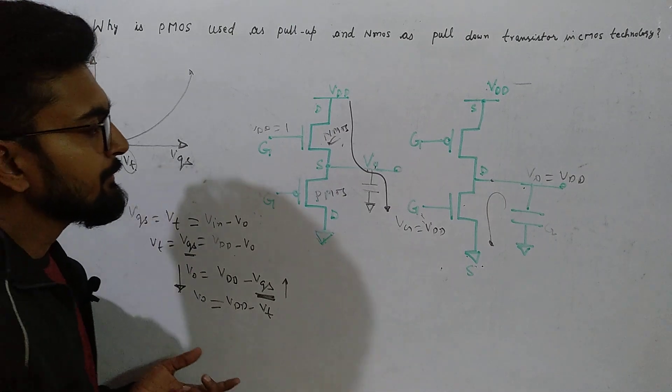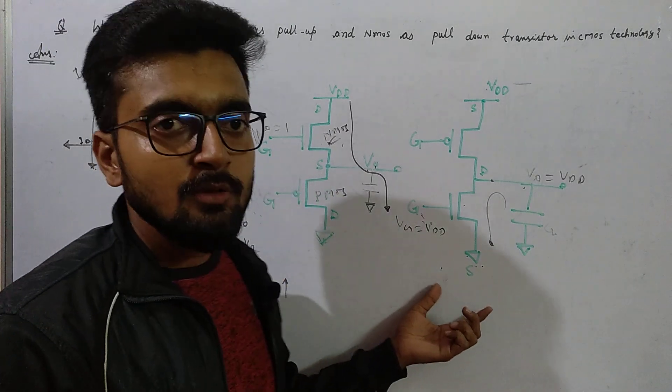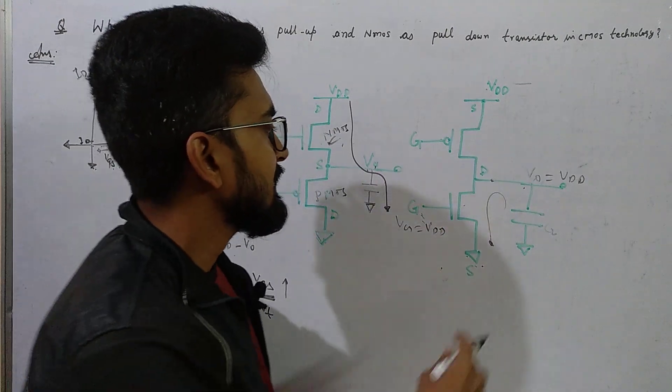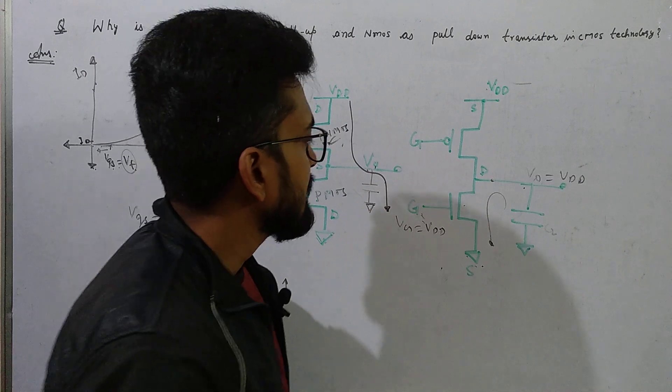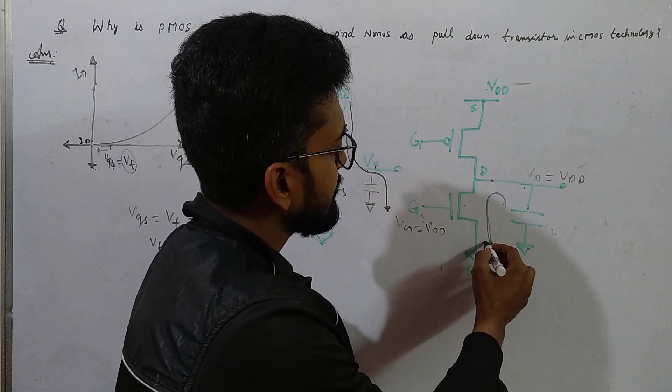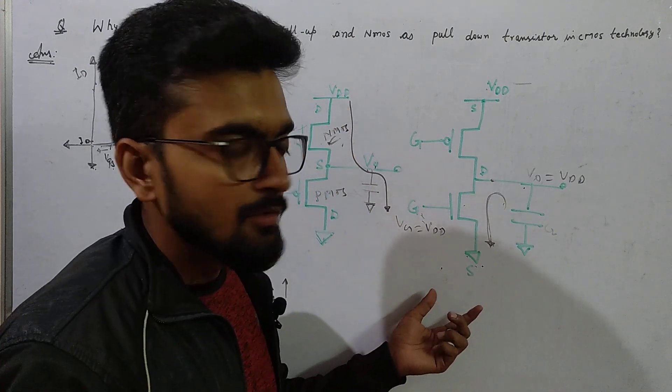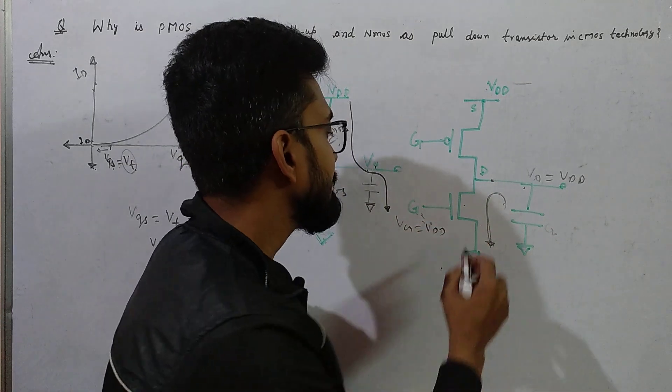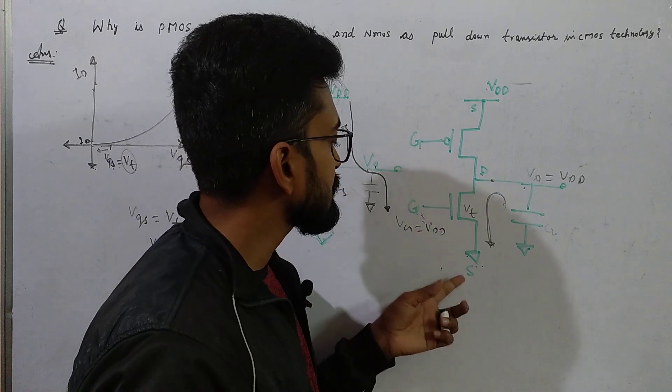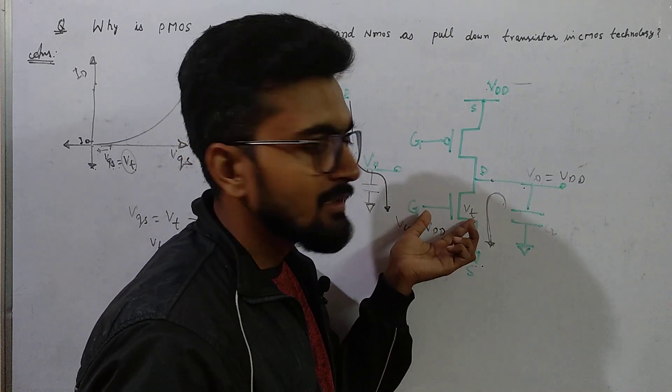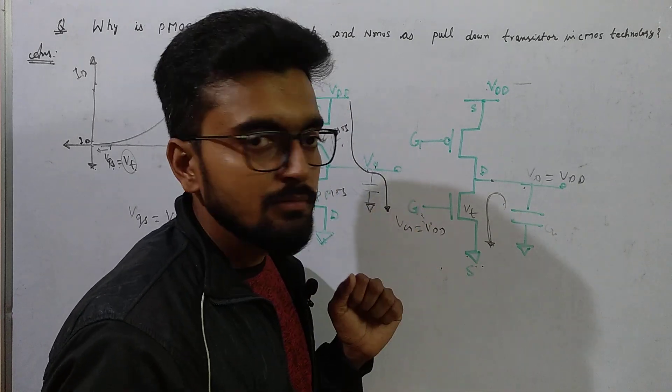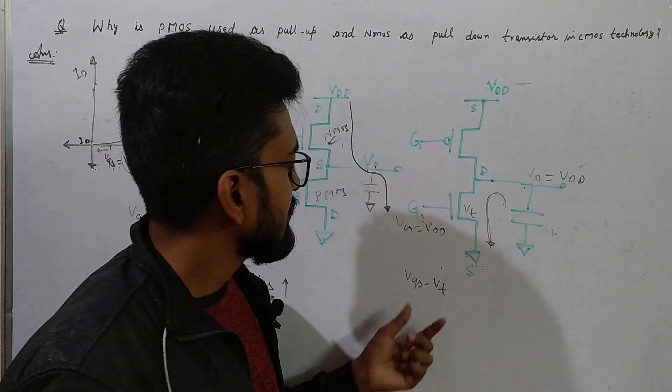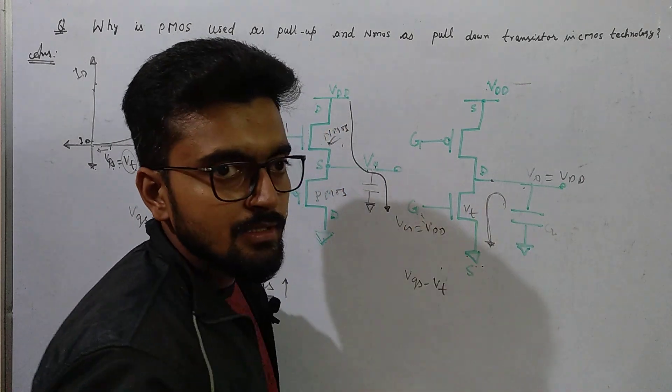But this doesn't create a problem when we consider NMOS as pull-down network. Consider when PMOS transistor is used as pull-up and the capacitor is charged to VDD. For a direct path from VDD to ground, we have to have this transistor on. For this transistor to be on, we need minimum threshold voltage. The gate-to-source voltage must be more than VT. VGS minus VT must be positive for this transistor to stay on.